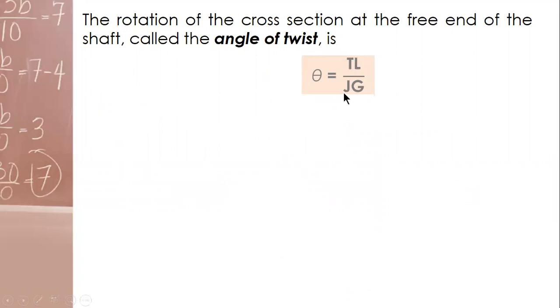TL over GJ. This was derived from elongation and then shear strain and then Hook's law, which states that stress is proportional to strain. Same also as axial. So this is the expression for angle of twist: TL over GJ.